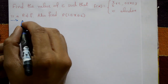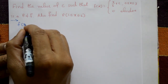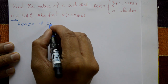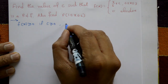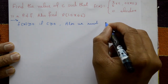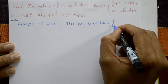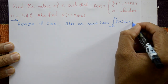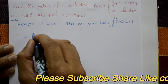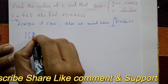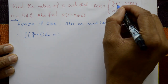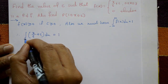For this continuous probability distribution, the first condition is f(x) ≥ 0, which is satisfied if c is also positive. The second condition is that the integral from minus infinity to plus infinity of f(x) dx must equal 1. The integration of f(x) = x/6 + c is taken with limits x from 0 to 3.